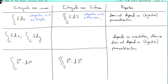These integrals do not depend on the parametrization as long as you don't go over the same part of the curve or the surface more than once. In particular, if your parametrization is a bijection from the domain to the curve or surface, then you always get the same answer for these integrals.